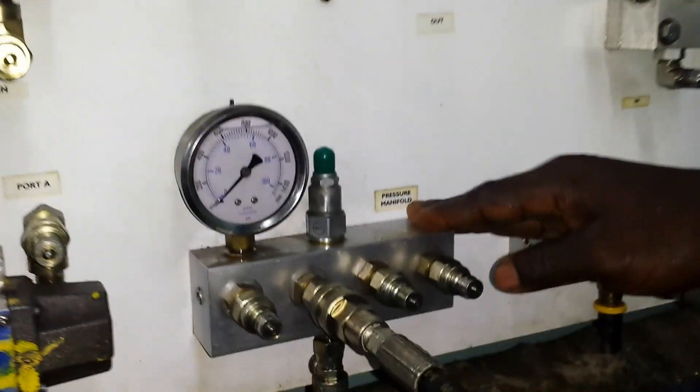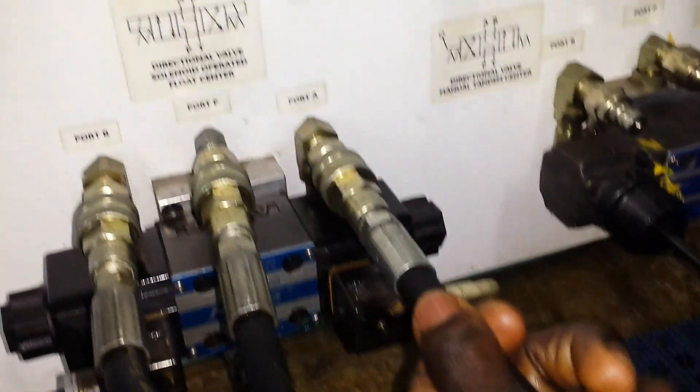Port T sends fluid to the manifold to the reservoir. Port P goes to the pressure manifold. Port A and Port B go to the rear end.